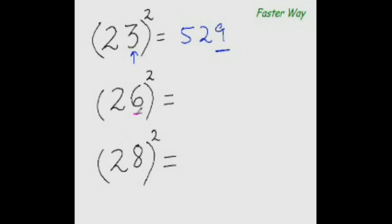Next one. 6 plus 26 is 32 and double of 32 is 64 and 6 square is 36. 64 plus 3 is 67 so the answer is 676. Now 8 plus 28 is 36 and 36 two times is 72 and 8 square is 64. 72 plus 6 is 78 so the answer is 784.